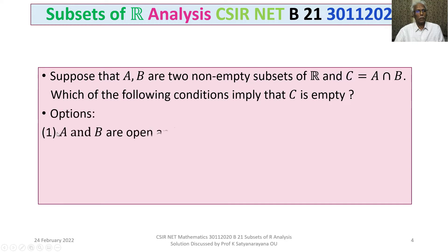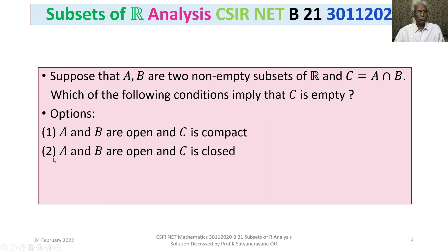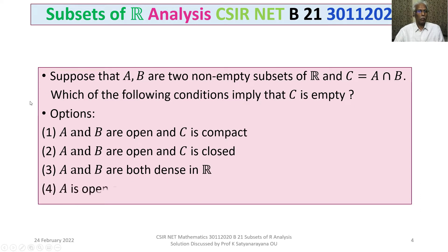Option 1: A and B are open and C is compact. Option 2: A and B are open and C is closed. Option 3: A and B are both dense in R. Option 4: A is open and B is compact.